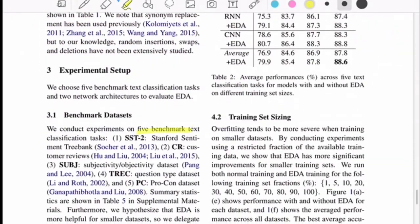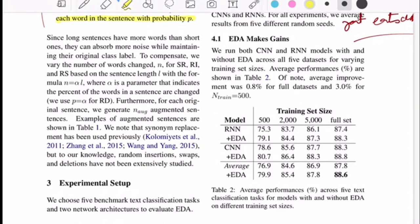Now let's see the results. They use five benchmark text classification tasks: Stanford Sentiment Treebank, customer reviews, subjective objective dataset, TREC question answering, and ProCon dataset.